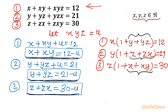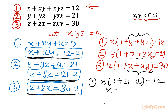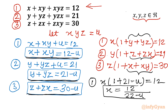Now we can substitute these three values. I will put y plus yz equals 21 minus u into equation 1. So I can write x times (1 plus 21 minus u) equals 12. From here I can write x equals 12 divided by (22 minus u). This is our x.